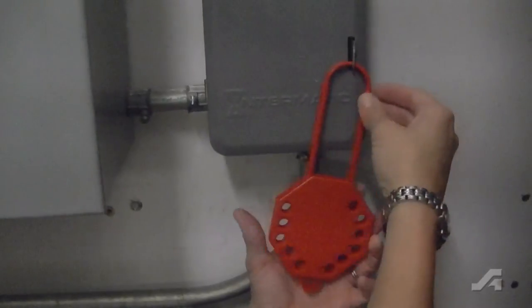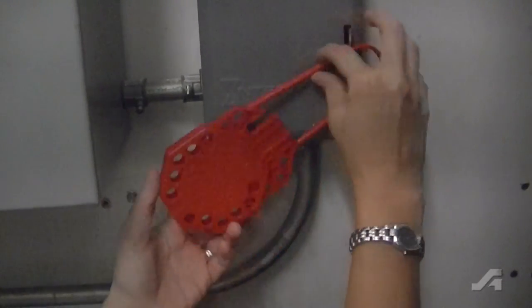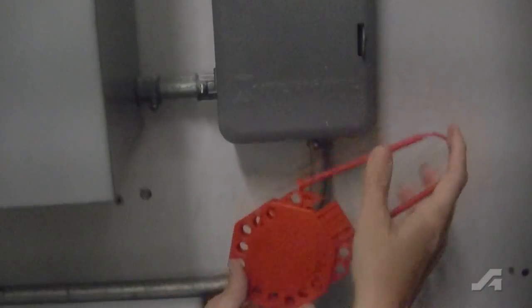To remove, simply remove the padlocks and slide the inner body upward to release the locking loop from the outer sleeve.